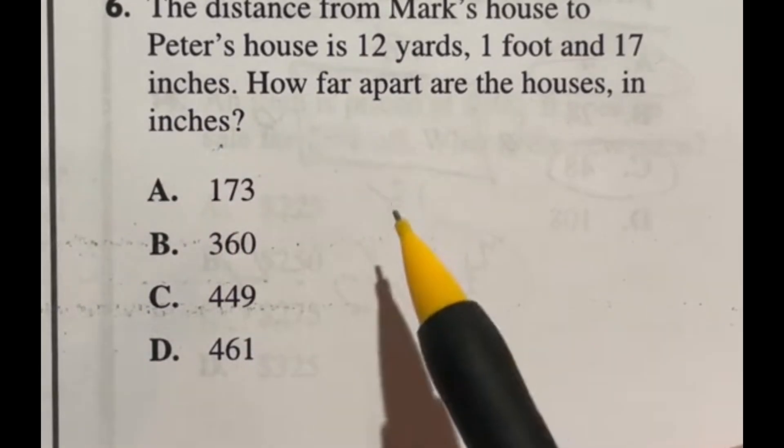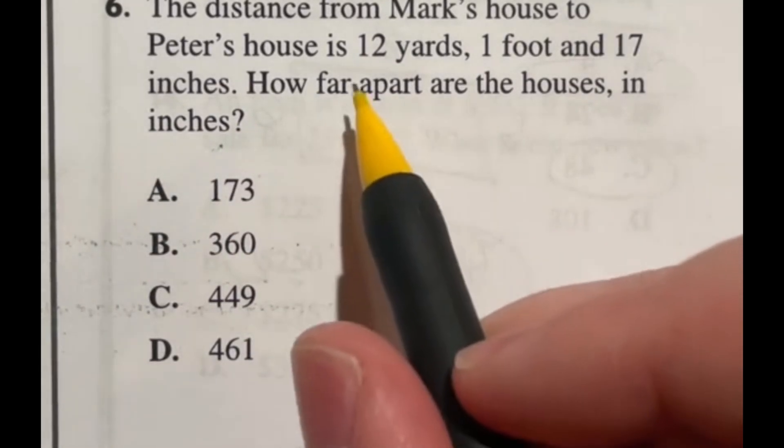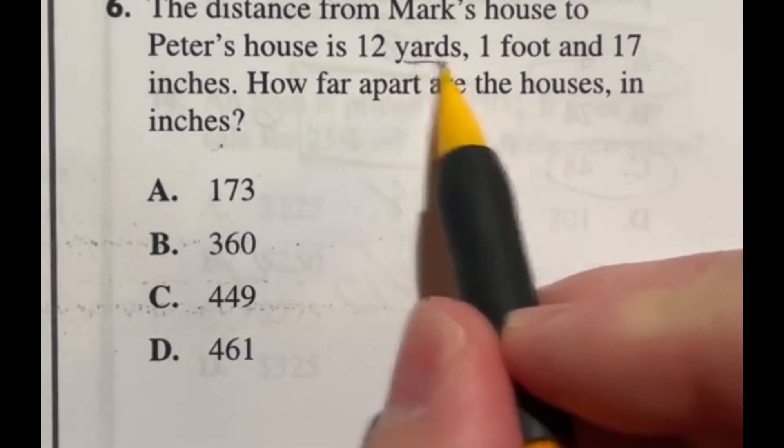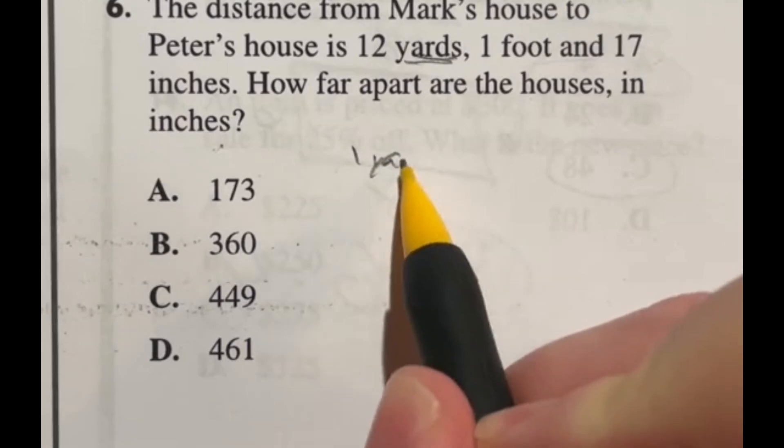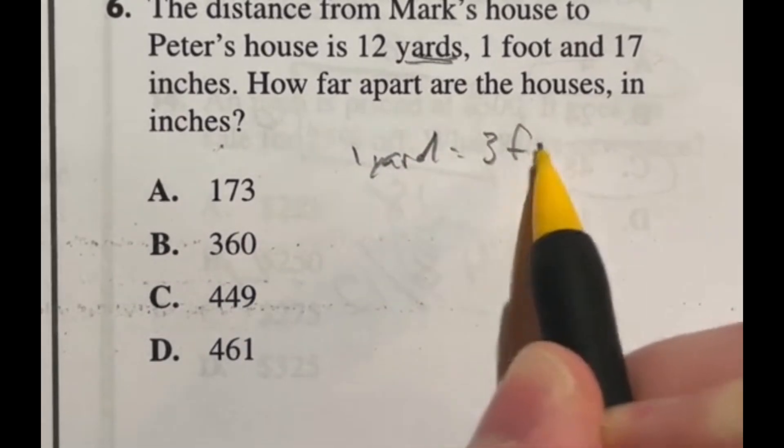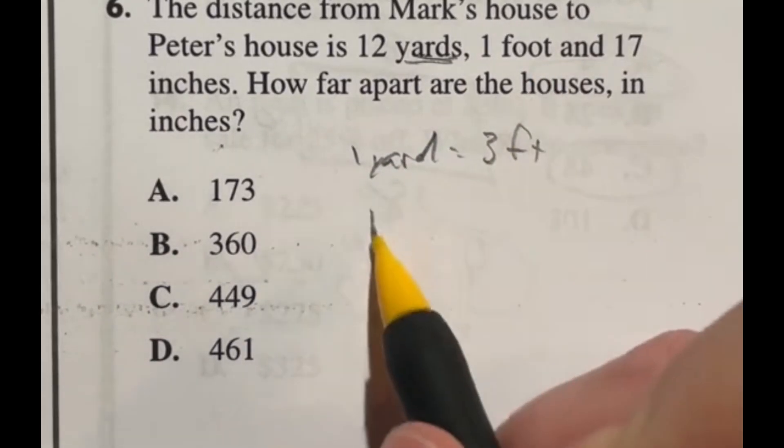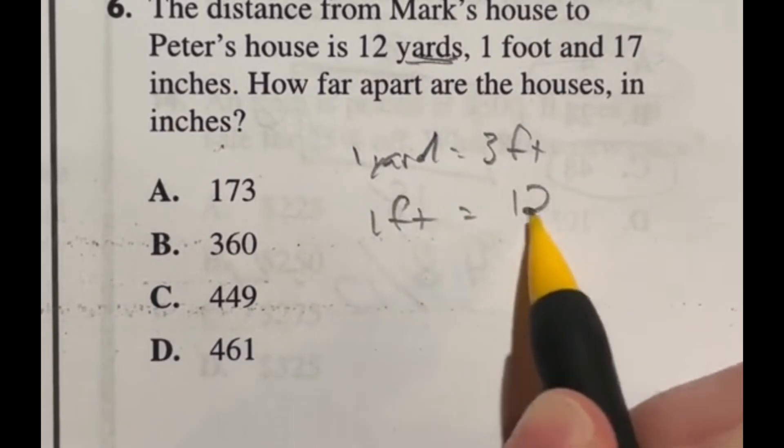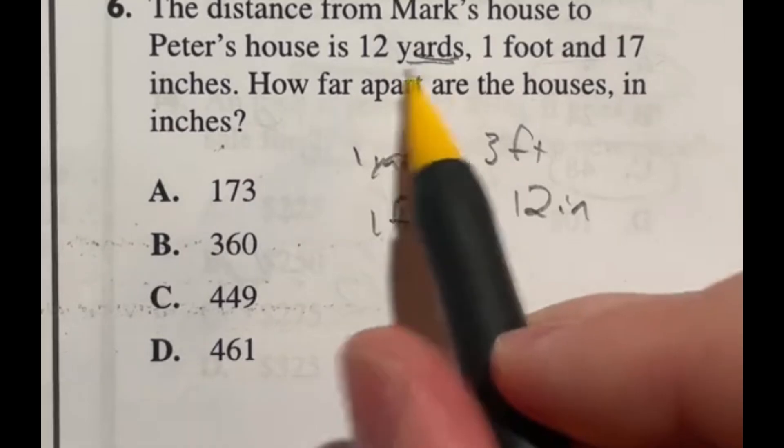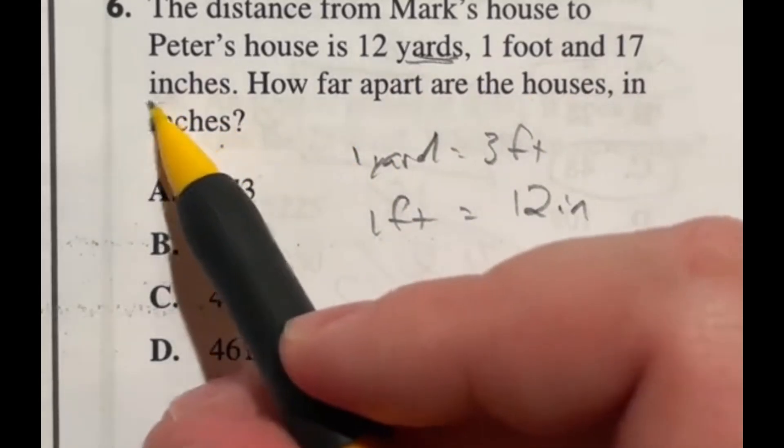There are a few bits that you need to know by heart here. You need to know that one yard equals three feet. You need to know that one foot equals 12 inches, because we're going to be moving down the chain here to get everything into inches.